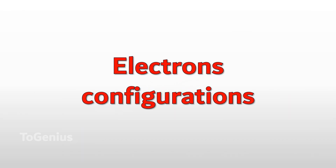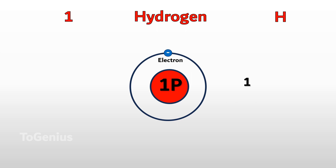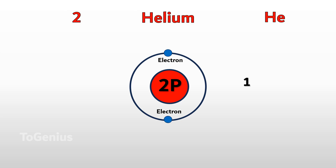Next, electron configuration. Let's clarify this by looking at the electron configuration of a few elements. Hydrogen has an atomic number of 1, meaning it has 1 proton and 1 electron. Being in period 1, it has only 1 electron shell. Helium has an atomic number of 2, meaning it has 2 protons and 2 electrons. Being in period 1, it has only 1 electron shell.